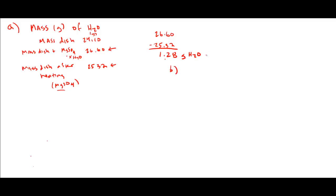That would be part B. And if we want to turn that into moles, we need to divide by the molar mass. One mole of water is 18.0 grams. So in total, there are 0.0711 moles of water evaporated.